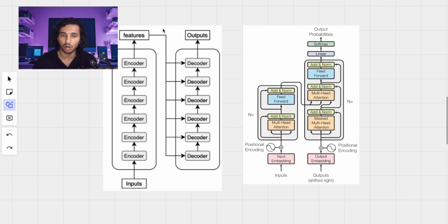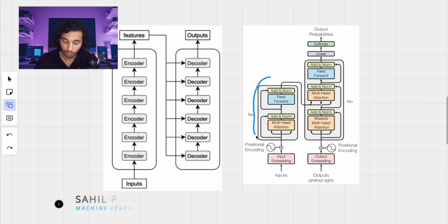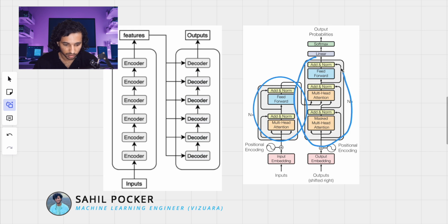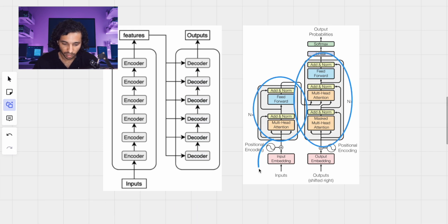In the previous video, we saw an overview of how transformers work. We saw that there are encoder stacks here, then there's the decoder stacks here, and there is also the input over here. In this video, we'll focus mainly on the input embedding here and how positional encoding is added to it and fed into the network.